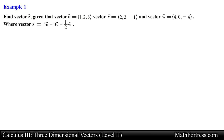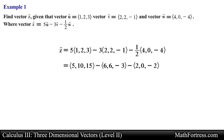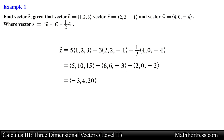In this problem we need to use the properties of vector addition to find the sum of these vectors. We first need to carry out scalar multiplication for vectors u, v, and w. Next it is just a matter of adding or subtracting the vectors component-wise. Doing that and simplifying, we obtain the final answer equal to (-3, 4, 20). Notice that vector arithmetic in R³ is essentially the same as in R².